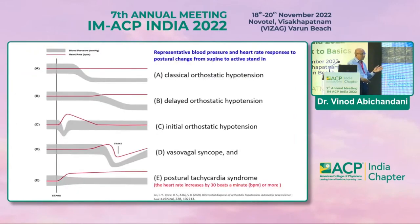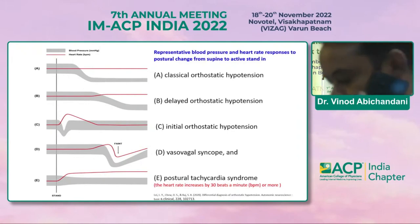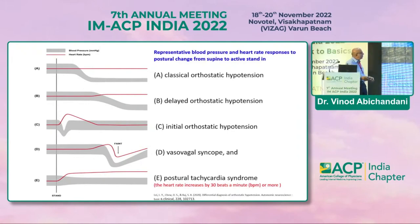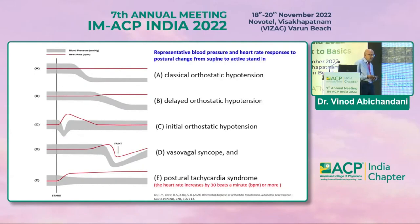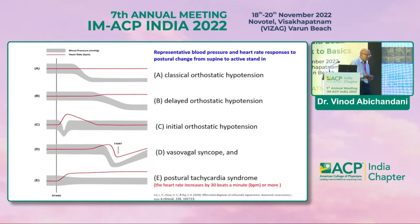When a person rapidly stands up from a supine position, the red line denotes heart rate in beats per minute and the gray bar denotes blood pressure. In classical orthostatic hypotension, heart rate is hardly affected and within three minutes the blood pressure falls. In delayed orthostatic hypotension, heart rate is only marginally if at all affected, but there is a drop in blood pressure after three minutes of active standing.